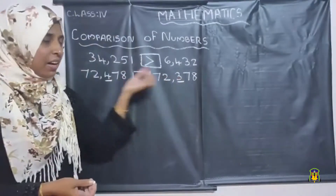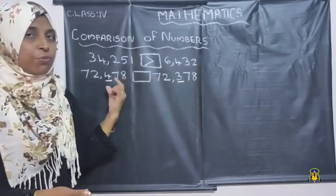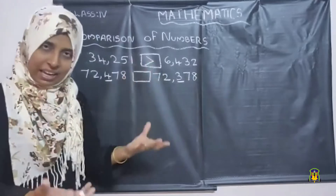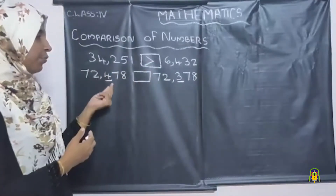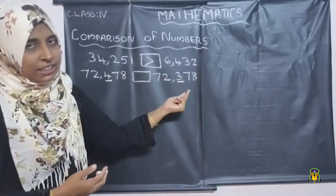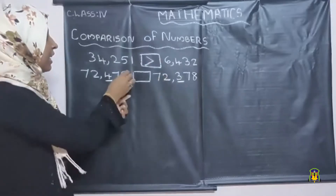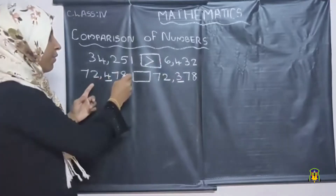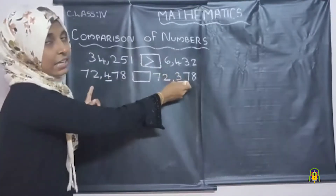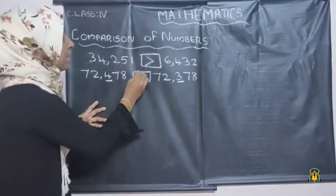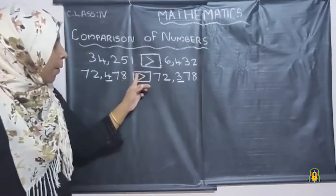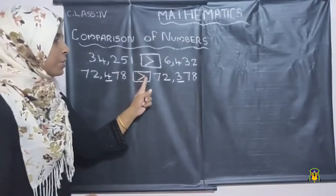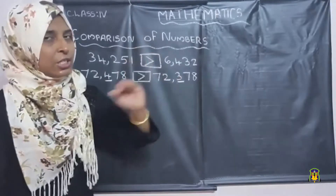Four and three — which one will be greater? Yes, four is greater than three. That means the first number will be greater than the second number. So we want to put the greater than symbol: the open side should face towards the greater number and the closed side should face towards the smaller number.